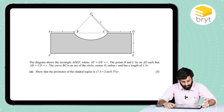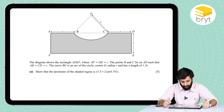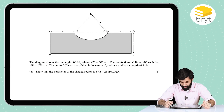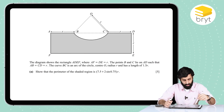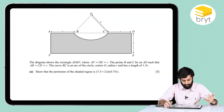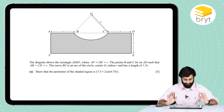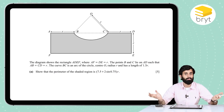So it says the diagram shows the rectangle ADEF, where AF equals DE, which equals R. The points B and C lie on AD such that AB equals CD, which equals R. The curve BC is an arc of a circle, center O, radius R, and has a length of 1.5R. We need to show that the perimeter of the shaded region equals a given expression. Let's find out how to do that.